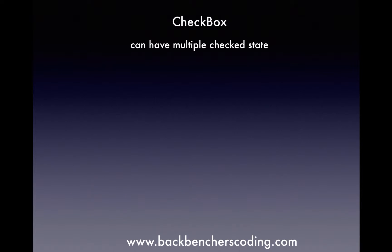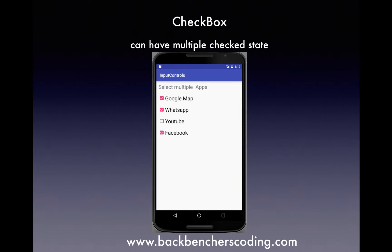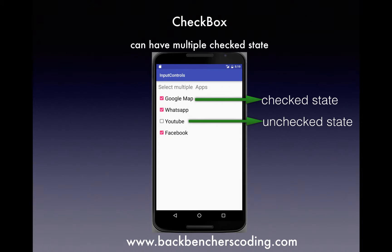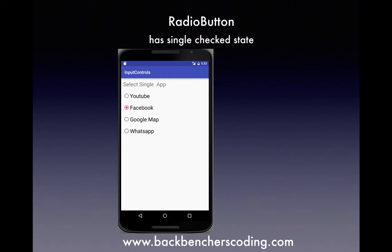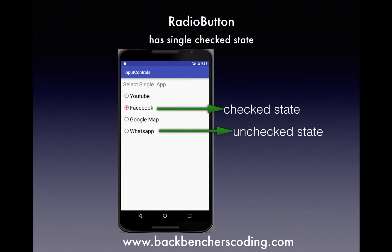First, checkbox is a two-state button represented by a checked and an unchecked state. Multiple selections can be done using checkbox. Next we have a radio button. They are also two-state grouped buttons which are grouped together in a radio group. Unlike checkbox, only a single selection can be made in radio button.